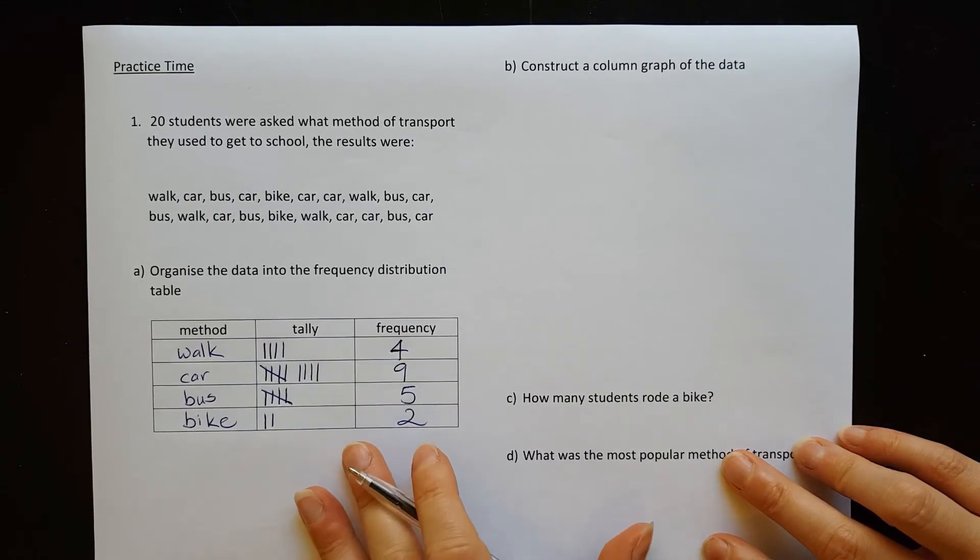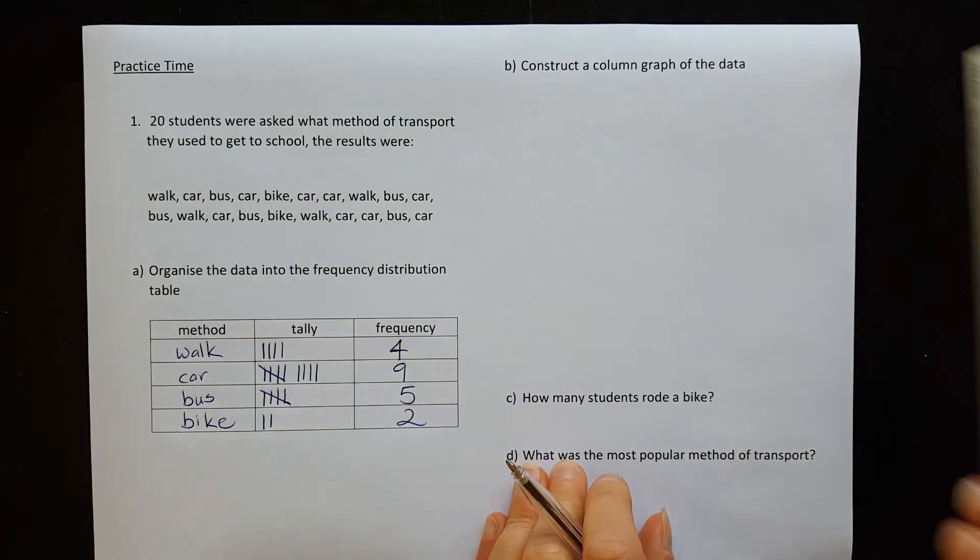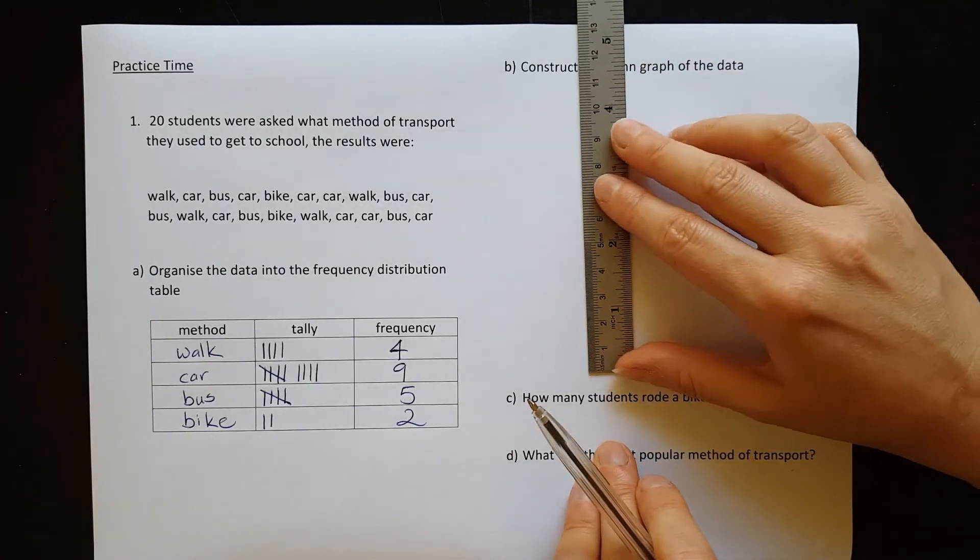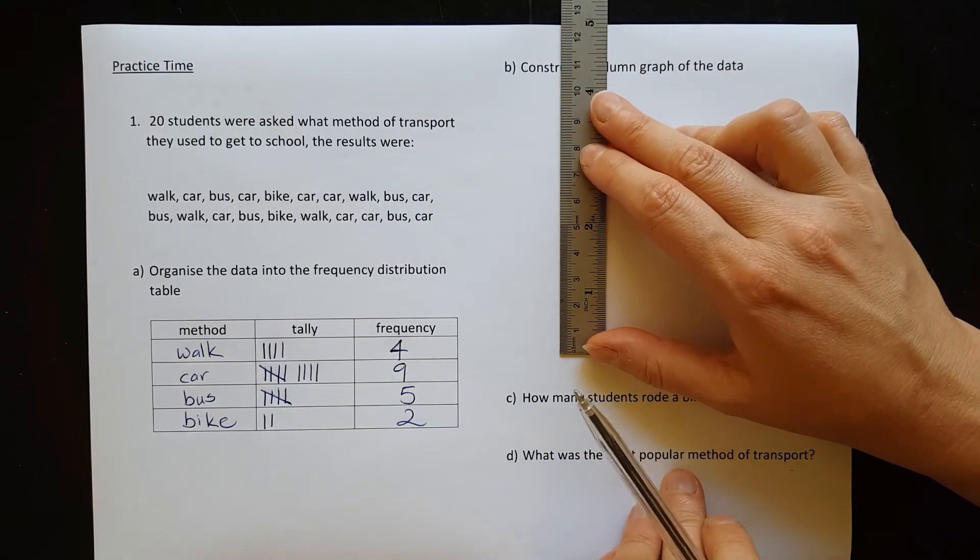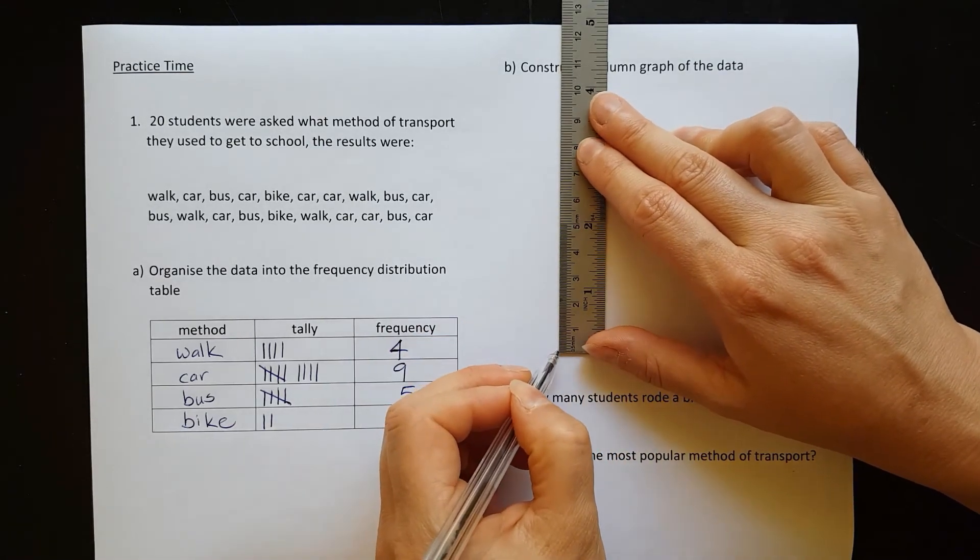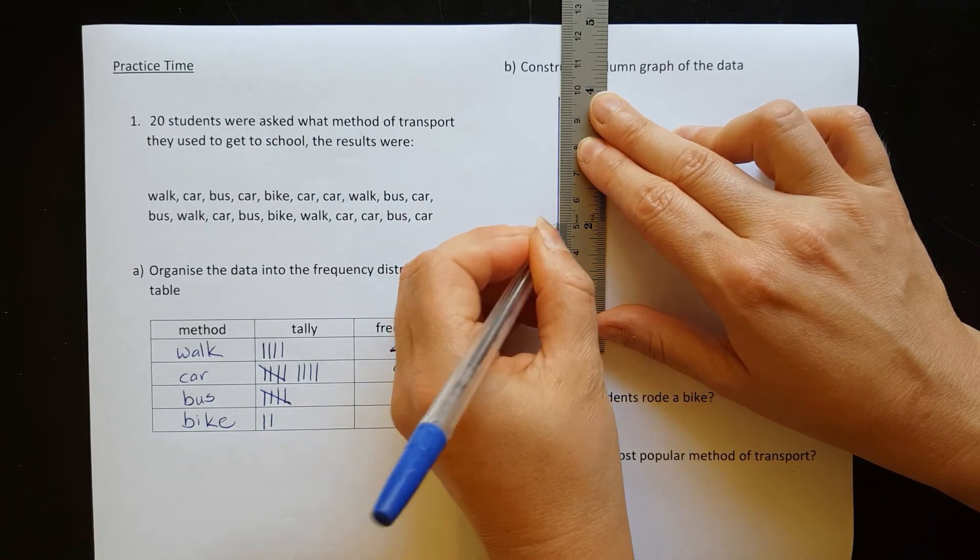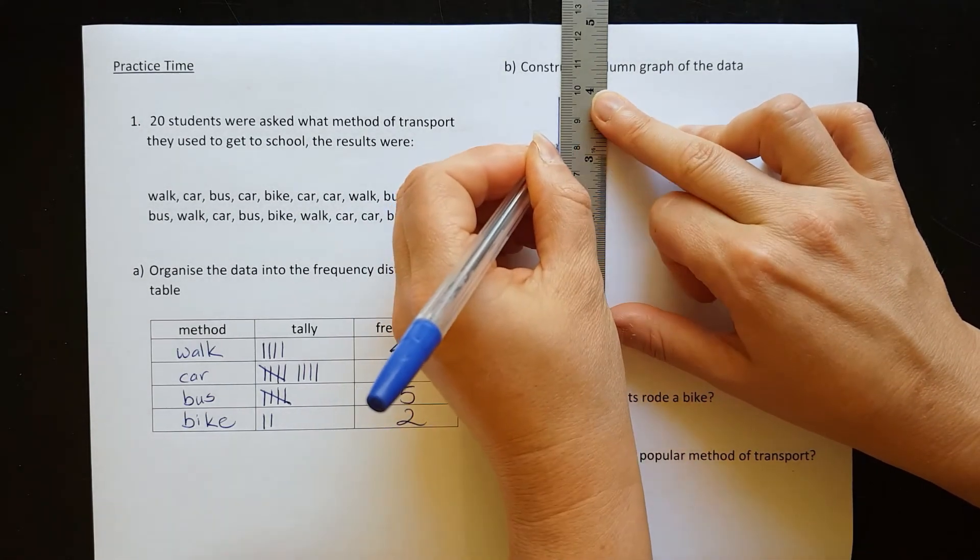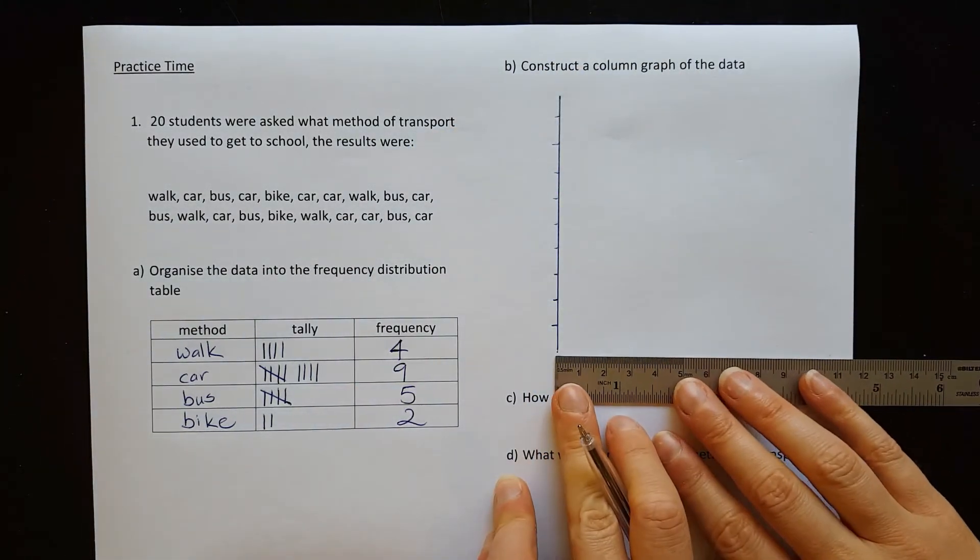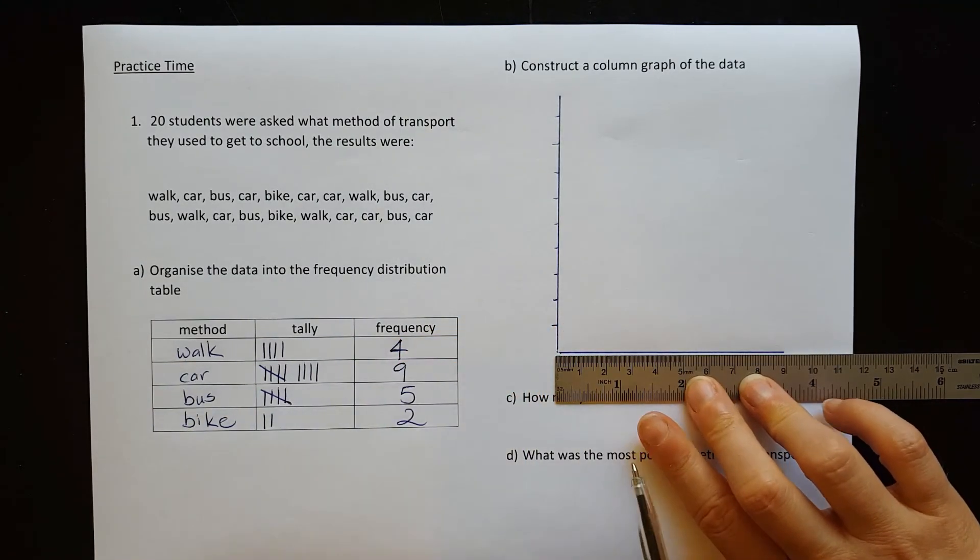Using our frequency distribution table, now we can draw a column graph. Remember the frequency is the vertical axis and our highest frequency is nine. So we're going to need nine spaces. So I can fit nine centimeters on here. So let's make a centimeter for each one. One, two, three, four, five, six, seven, eight, nine. And across the bottom, the horizontal axis is going to be the method of transport. So we're going to have walk, car, bus, and bike.